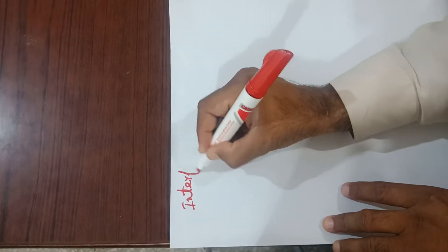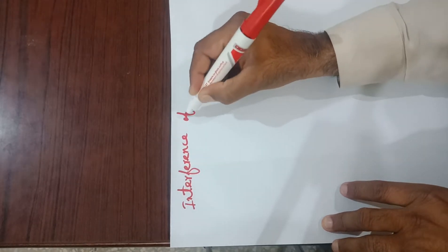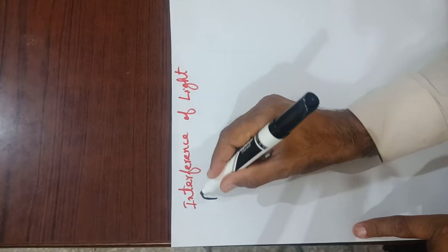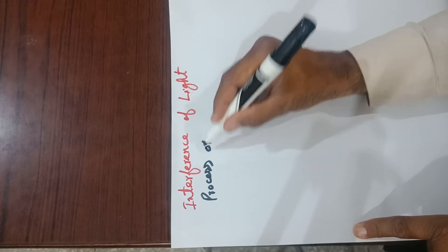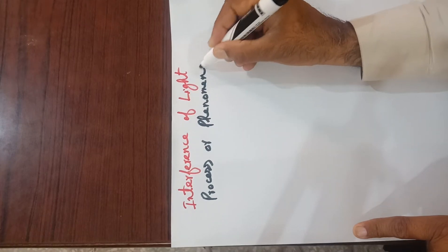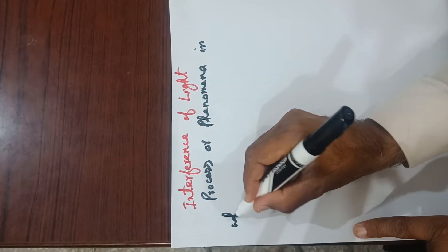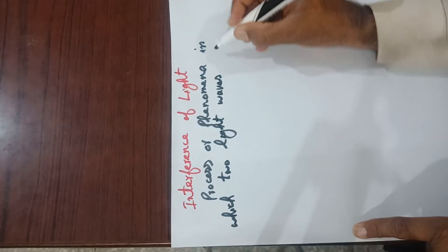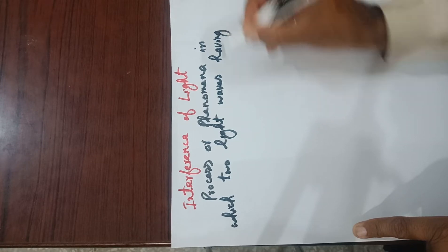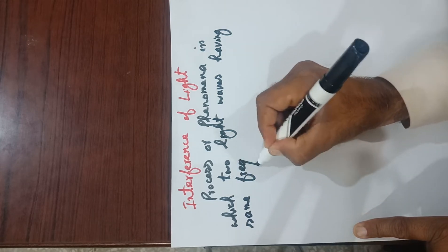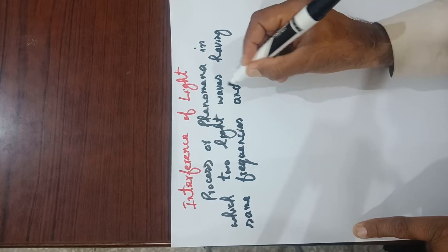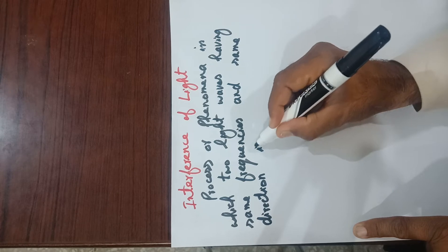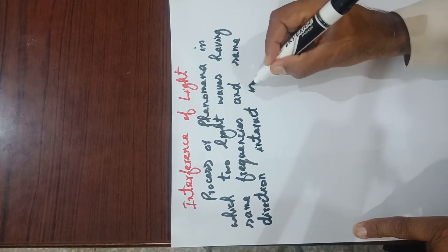Interference of light is the process or phenomena in which two light waves having the same frequency and same direction interact. It is called interference of light.